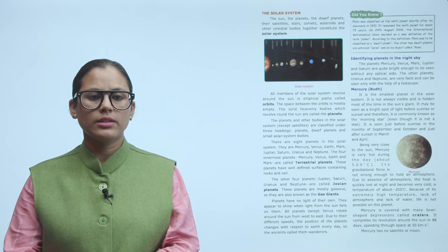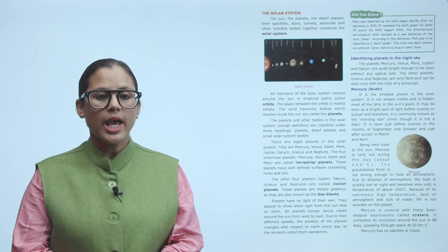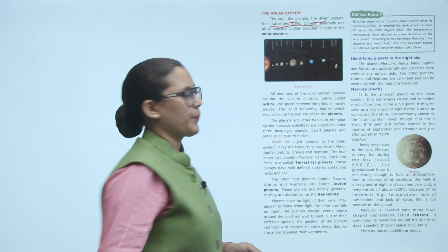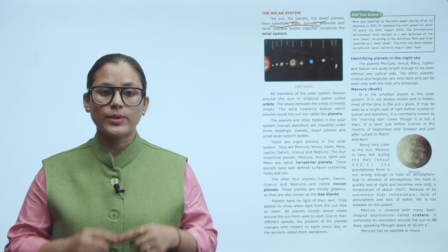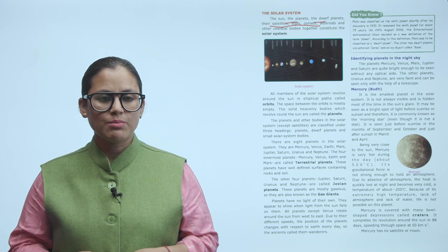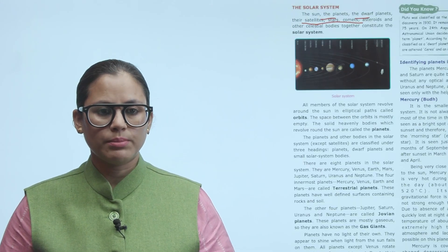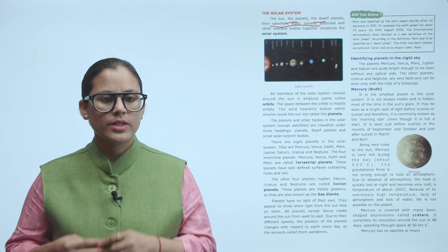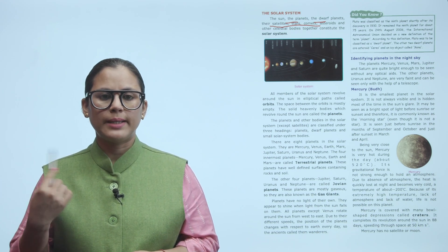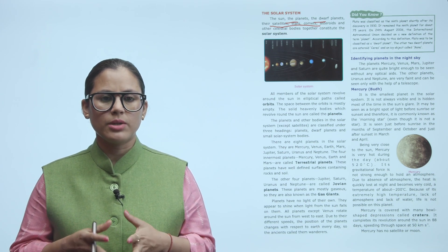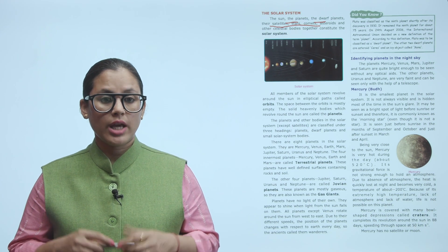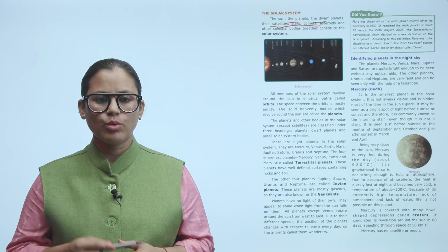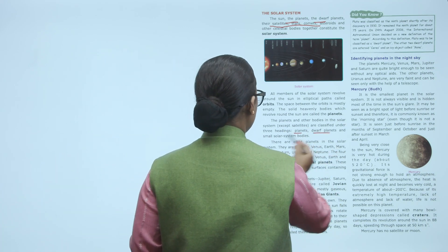The Solar System: The sun, the planets, the dwarf planets, the satellites, stars, comets, asteroids, and other celestial bodies together constitute the solar system. All members of the solar system revolve around the sun in elliptical paths called orbits. The space between the orbits is mostly empty. The solid heavenly bodies which revolve around the sun are called the planets. The planets and other bodies in the solar system except satellites are classified under three headings: planets, dwarf planets, and small solar system bodies.